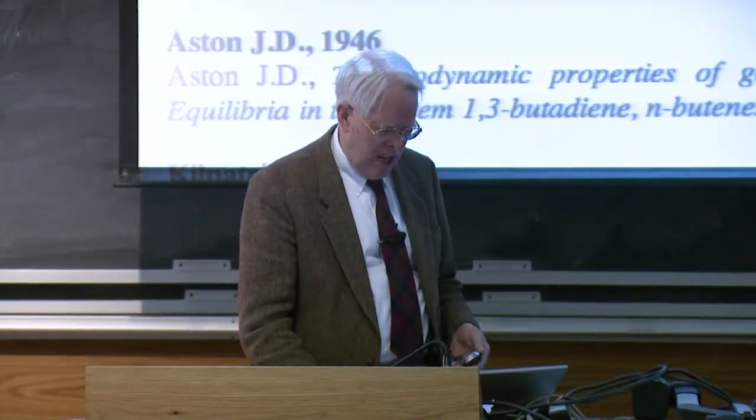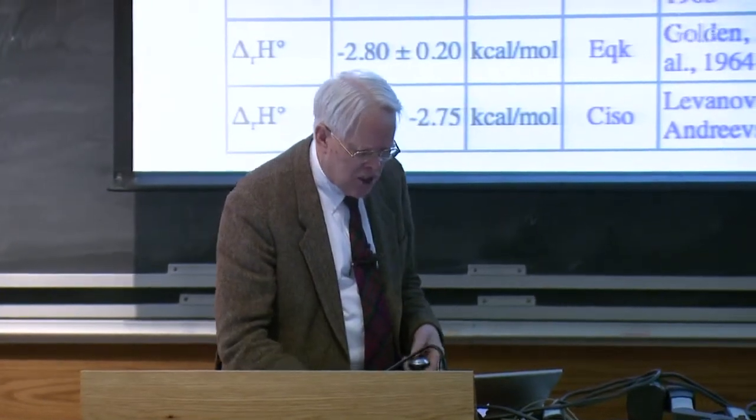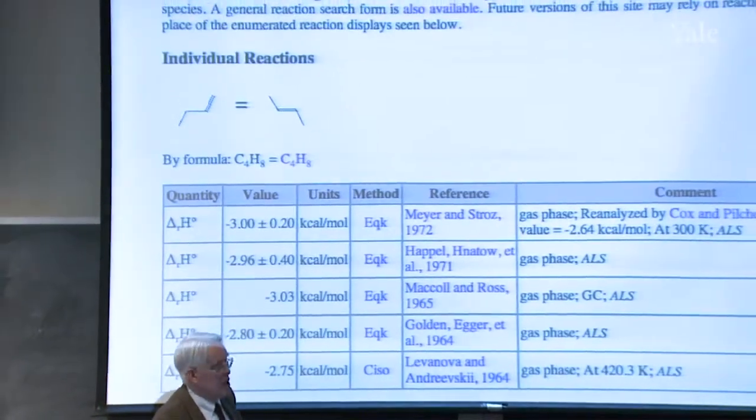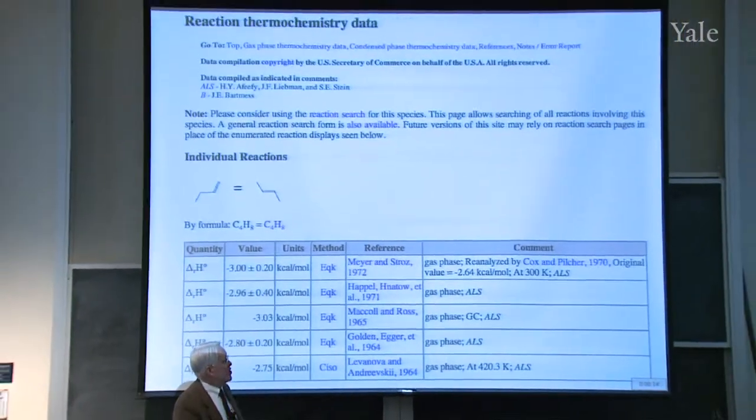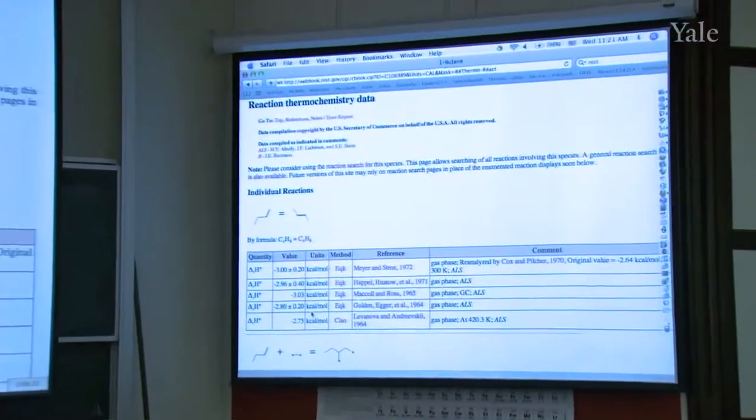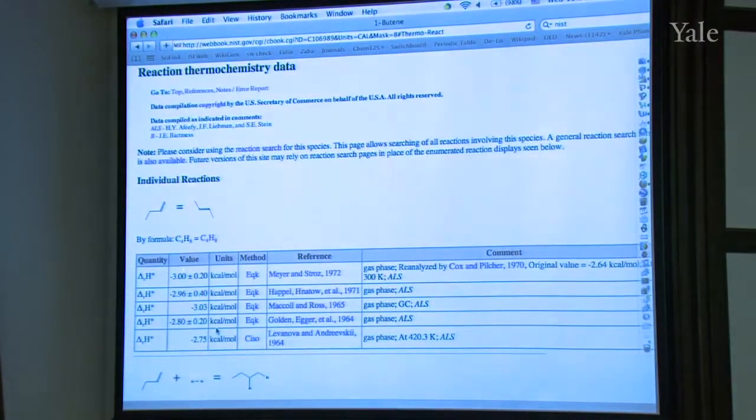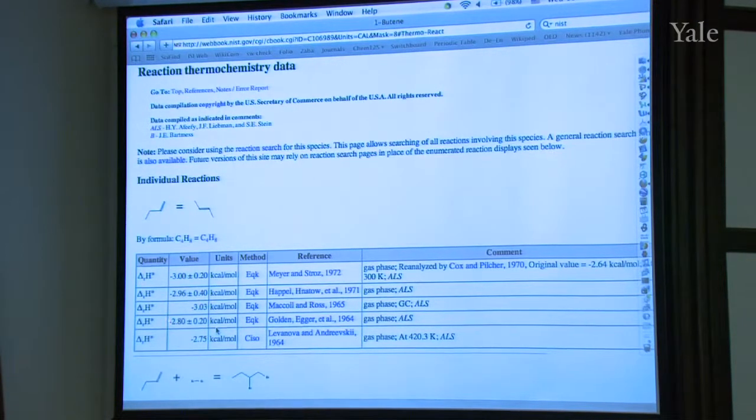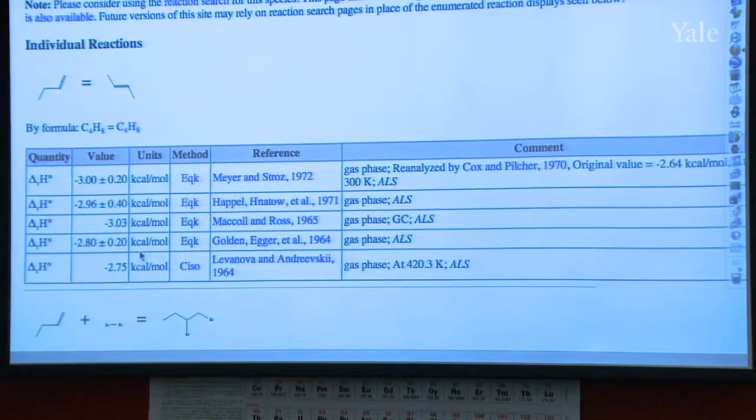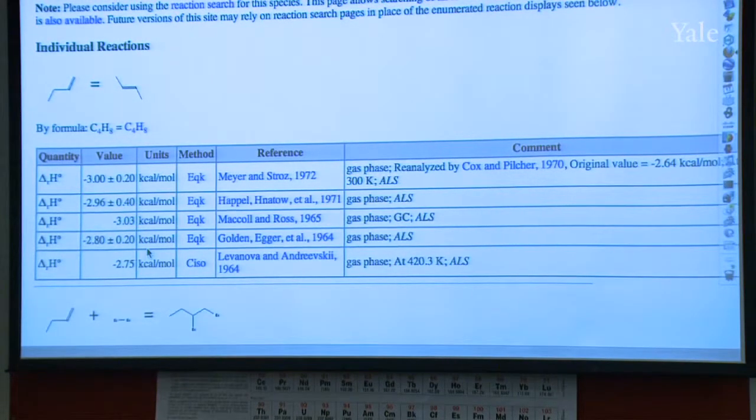This started in 1942. The American Petroleum Institute started a big project to determine thermodynamic properties of all the things that could be in petroleum, and refined petroleum and so on. So this was done first at the National Bureau of Standards, then to Mellon Institute in Pittsburgh, as it was then. And then he went to Rice. So there's a method in what they're doing here. If we go down a little further, we could look at reaction thermochemistry.